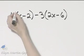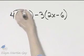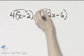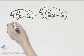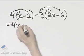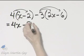To simplify this expression, we will first use the distributive property and multiply. So that will be 4 times x, which is 4x, minus 4 times 2, that's 8.